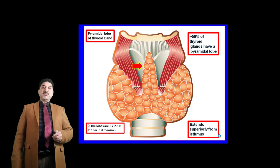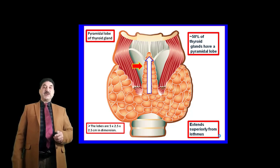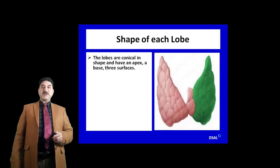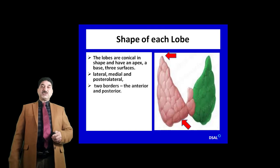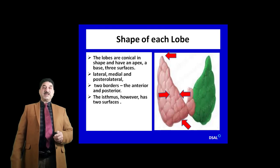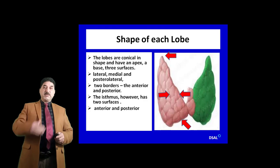Each lobe is 5 by 2.5 by 5 centimeters in dimension. The average weight of the thyroid gland is 14 to 25 grams. Each lobe is conical in shape with a base and apex, and two borders — anterior and posterior — separating three surfaces: lateral, medial, and posterior-lateral. The isthmus has two surfaces, anterior and posterior, separated by superior and inferior borders.